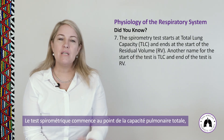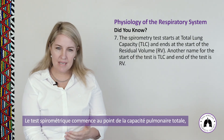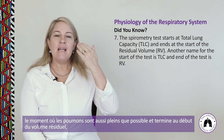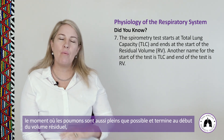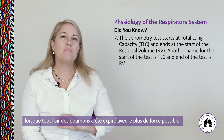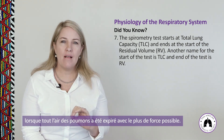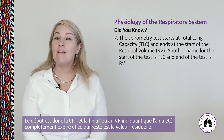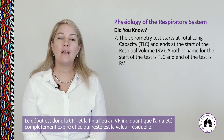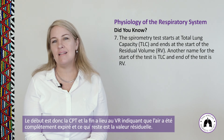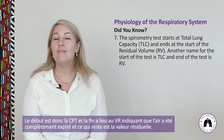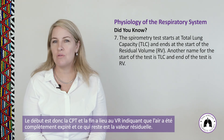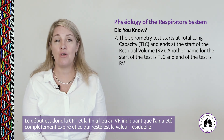A spirometry test starts at total lung capacity — the point at which the lungs are completely full — and ends at residual volume, when every last bit of air has been breathed out as forcibly as possible. The total lung capacity represents the start of the test, and residual volume indicates that all air has been breathed out and what remains cannot be further expelled.